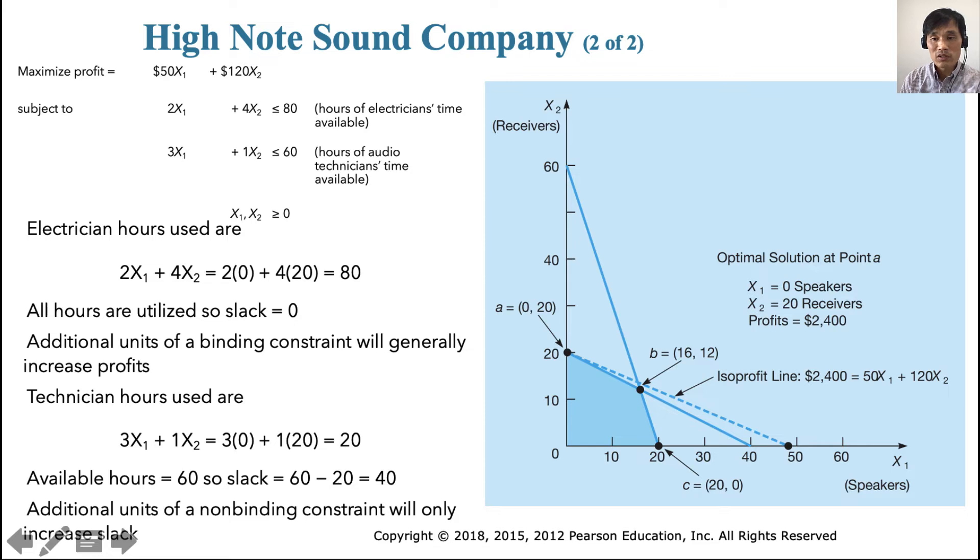Now, if you look at this, let us think about the electricians hours used. Since the optimal point is zero speakers and 20 receivers, we can plug them into the electricians time constraints as I have done here, and we find that it is 80. In other words, you are spending the maximum resources allowed for electricians time. So there's no slack. Therefore, this is a binding constraint. You cannot do anything about this constraint. This is the maximum resources that you can utilize. There's no slack and it is a binding constraint.